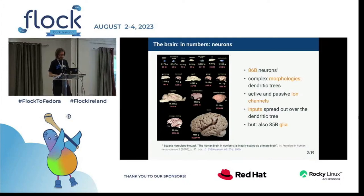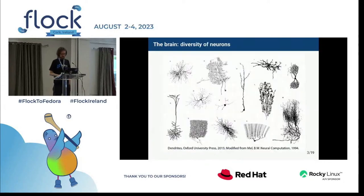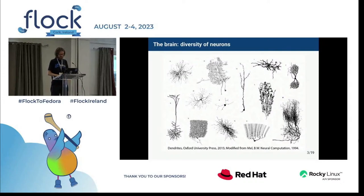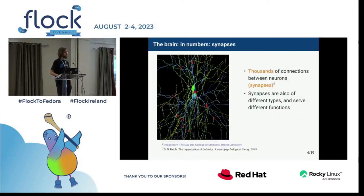More and more information suggests that glial support cells play an important role in neuronal signals and learning. The most recent estimate puts the number of neurons in the human brain at about 86 billion. Neurons in the brain are diverse — you see a few examples here. They also differ by other parameters such as protein composition. Each neuron connects with thousands of other neurons forming a massive network, so the brain can be thought of as a massively parallel processor.